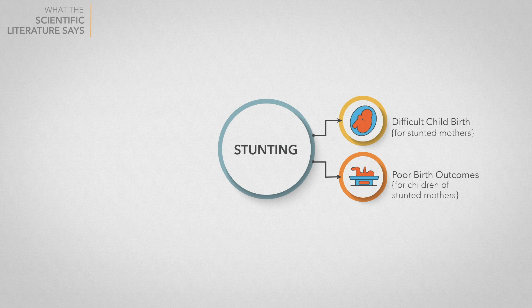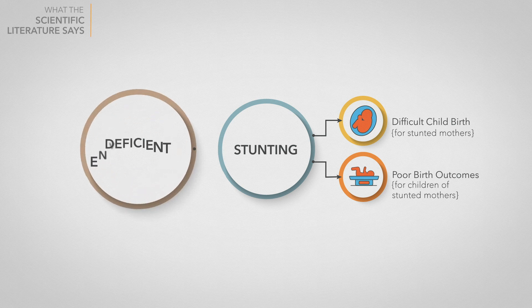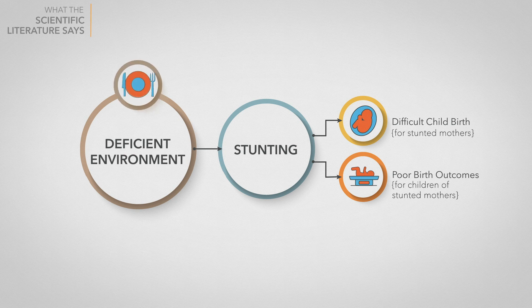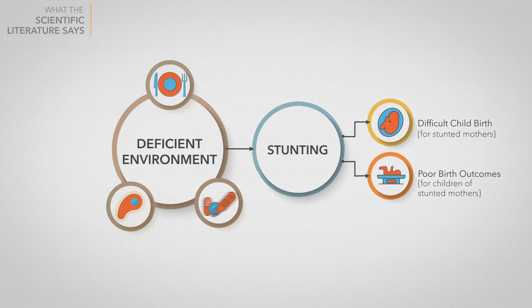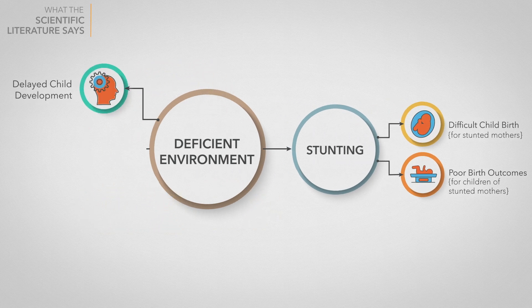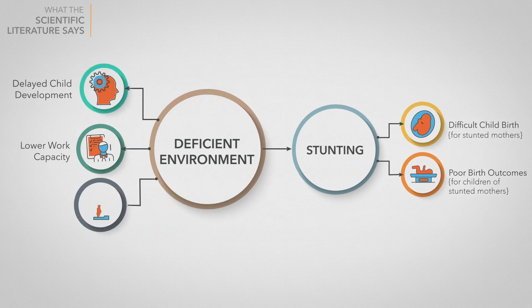For the other outcomes, the story goes as follows. Stunting is caused by the deficient environment in which children grow up. Deficient environments provide too little food to children, or food without enough nutrients, or cause children to get sick all the time. Deficient environments produce a lot of problems including delayed child development, lower work capacity and chronic diseases. Stunting does not cause these problems, but the deficient environment does.